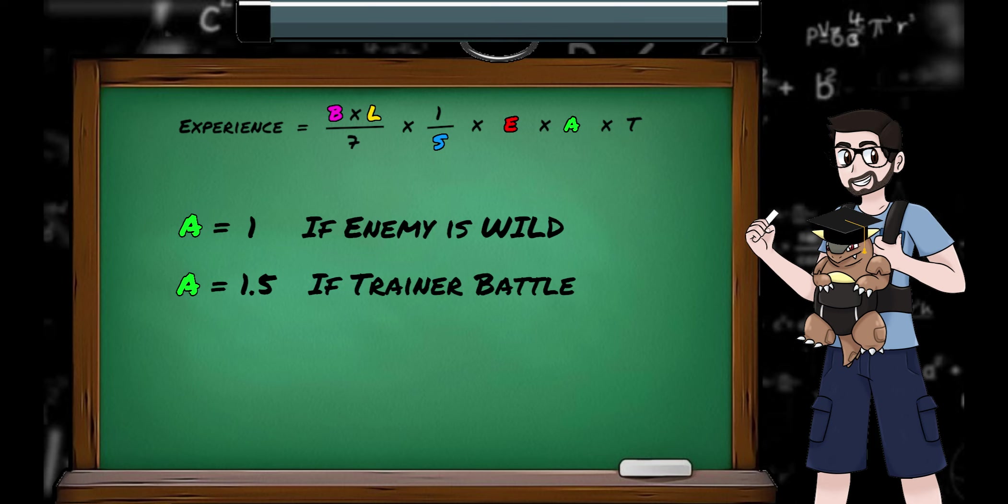I guess the idea behind this one is a trainer Pokemon might have better DVs than a random wild one, or the trainer AI makes for a harder fight than the random choices a wild Pokemon would make. So defeating a trainer Pokemon deserves more of a reward.